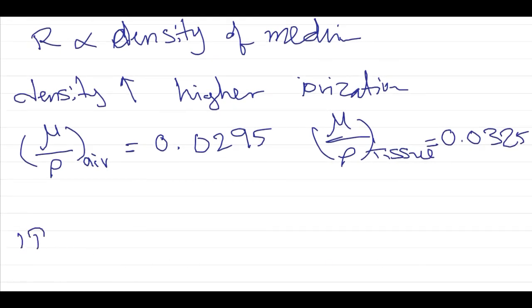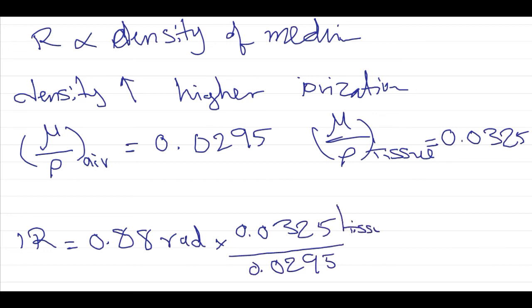So 1 Röntgen equals 0.88 Rad times the ratio of mass attenuation coefficients, 0.0325 divided by 0.0295.